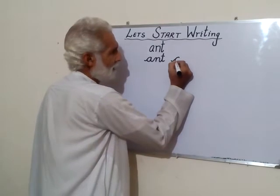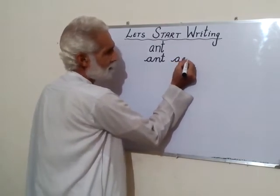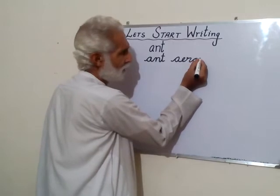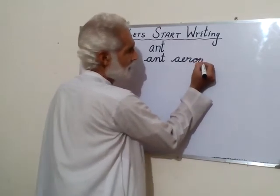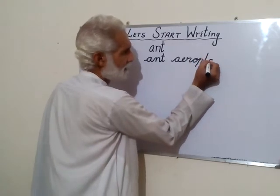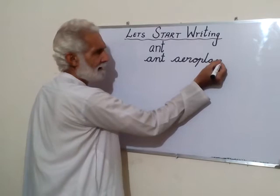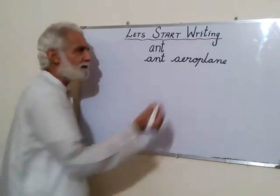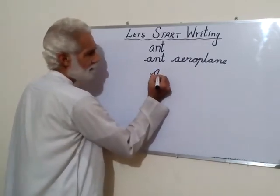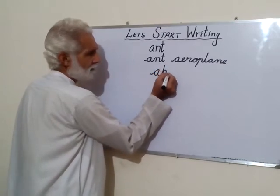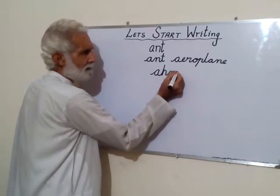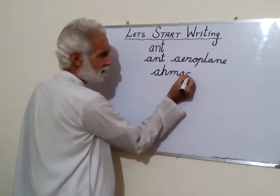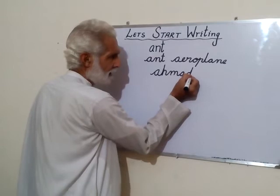Now look — when we write 'aeroplane' we write A, then E, then R, then O, then forward we make a P, then it goes up for L, then A, then N, and finally E.